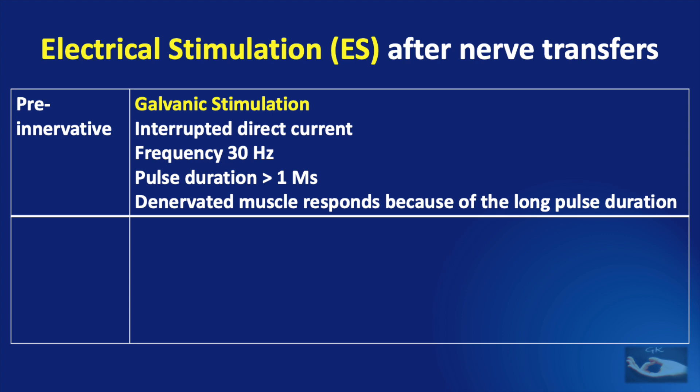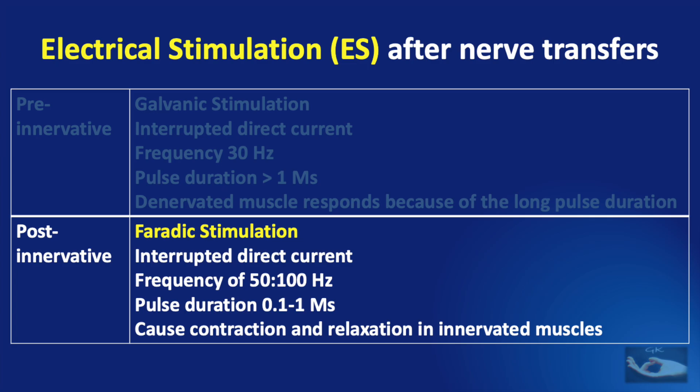In the pre-innervative phase, the muscle is already denervated, so galvanic stimulation is used. It is interrupted direct current with a frequency of 30 Hz with a long pulse duration of more than 1 millisecond. The denervated muscle responds because of the long pulse duration. An easy way to remember this is G-O-D — GOD: Galvanic stimulation for denervated muscle. Once the muscle has started getting re-innervated, faradic stimulation is started. This has interrupted direct current with a frequency of 50 to 100 Hz and a very short pulse duration of 0.1 to 1 millisecond. It causes contraction and relaxation in innervated muscles.